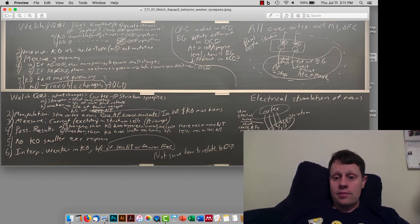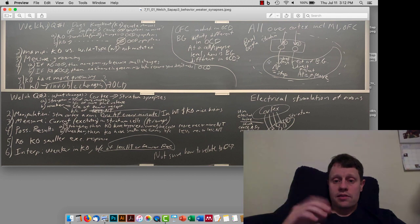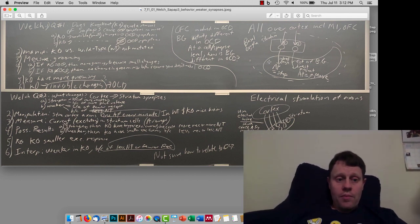Some of the cells in the striatum make direct projections to some of the other structures in the basal ganglia, and then other cells do what are called indirect projections. The directly projecting neurons, when they fire action potentials, increase the desire to move, and when the indirect projecting neurons fire action potentials, they promote a stopping of movement. It's obviously, as with everything else, more complicated than that, but that's kind of the main idea.